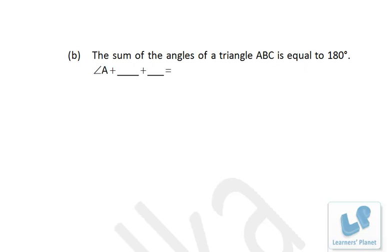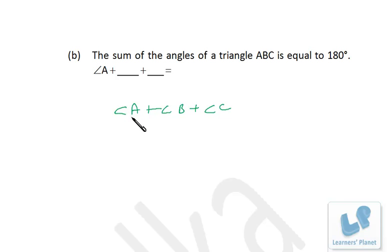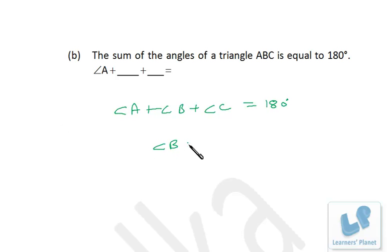The sum of angles of a triangle ABC is equal to 180 degrees, so angle A plus angle B plus angle C equals 180 degrees. If you are told that the sum of angle B and angle C is 90 degrees, then you can write angle B plus angle C equals 90 degrees.